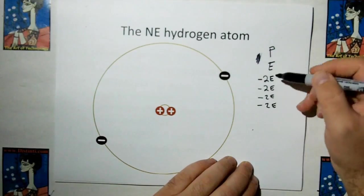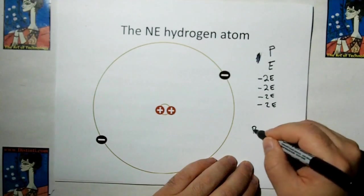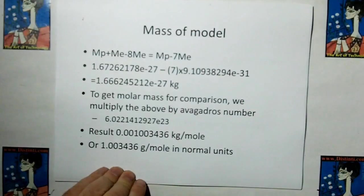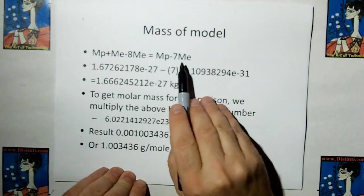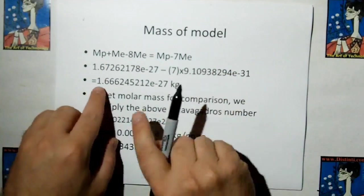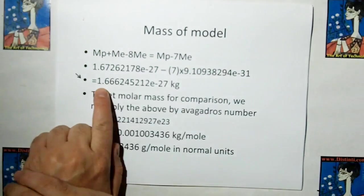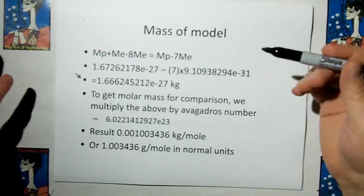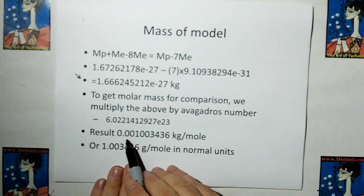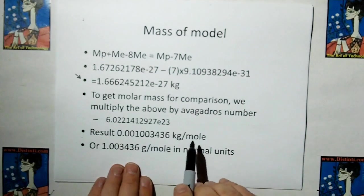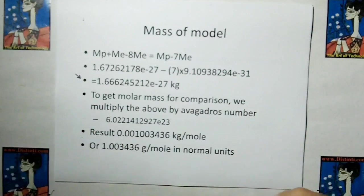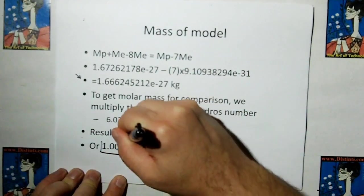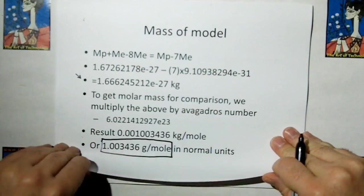So let's see where we get with this. If we add all this up, we're going to get P minus seven electrons. So let's go and add up the mass of a proton minus the mass of seven electrons. We take these values, and we end up with that the mass of the hypothetical hydrogen atom should be 1.66 times 10 to the minus 27. But to get it to molar mass for comparison purposes, we multiply the above by Avogadro's number, and we end up with 0.00100346 kilograms per mole.